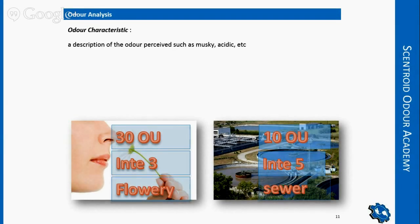Odor characteristic is simply defining what an odor smells like — musky, acidic, flowery, or a sewer smell. It's mostly used to try to pinpoint where the odor came from. If you live next to a paint plant and a wastewater treatment plant and you smell paint, you know who's responsible. But knowing it's 50 odor units with an intensity of five won't help you determine who is actually producing that odor.